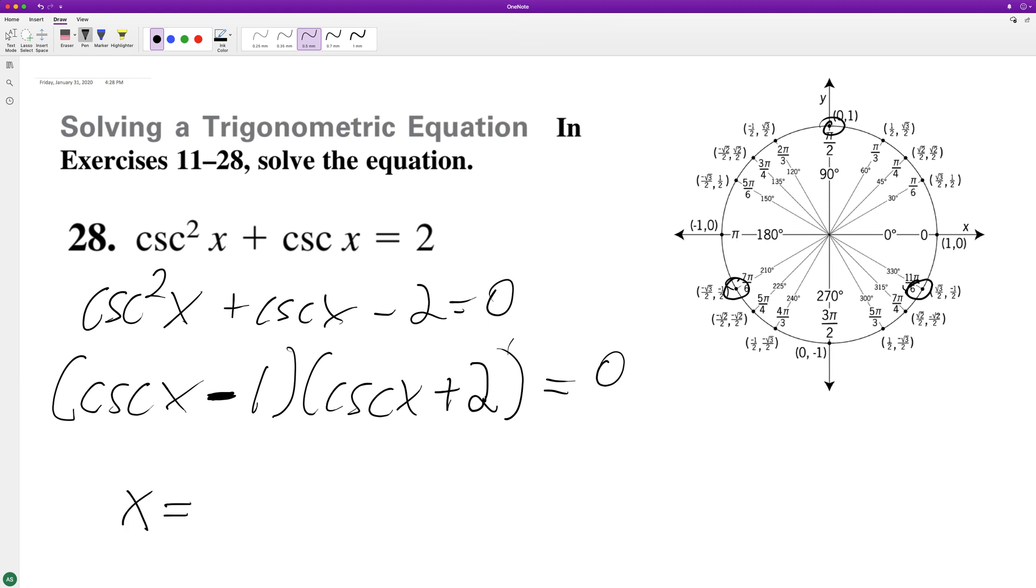So we're going to get x is equal to pi over 2 plus 2 pi n. Then we're going to get 7 pi over 6 plus 2 pi n, and then we're going to get 11 pi over 6 plus 2 pi n.